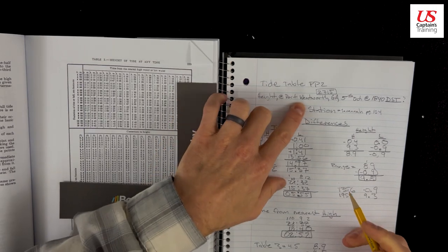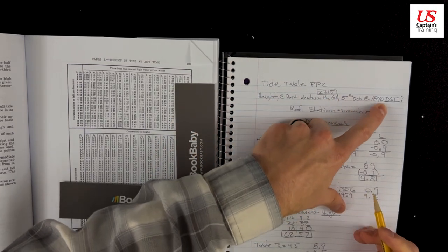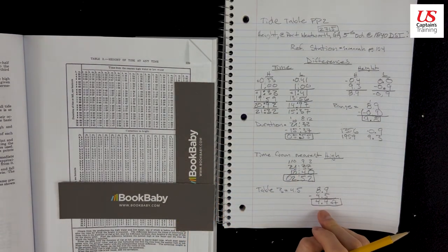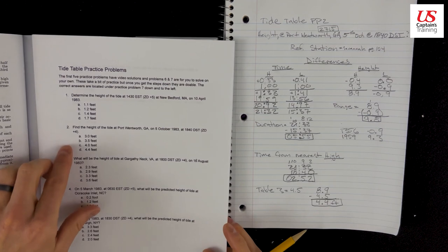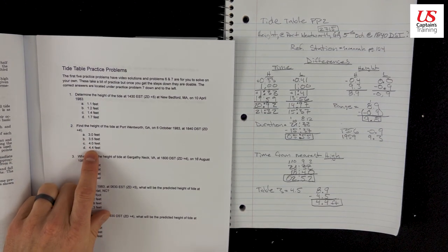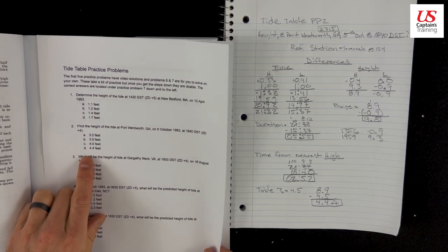The height of the tide at Port Wentworth, GA, the 5th of October at 1840 DST. Let's check. 4.4. Practice problem 2. We see 4.4 right here. That's the closest one. It's D. It's actually right on. So 2 is D.